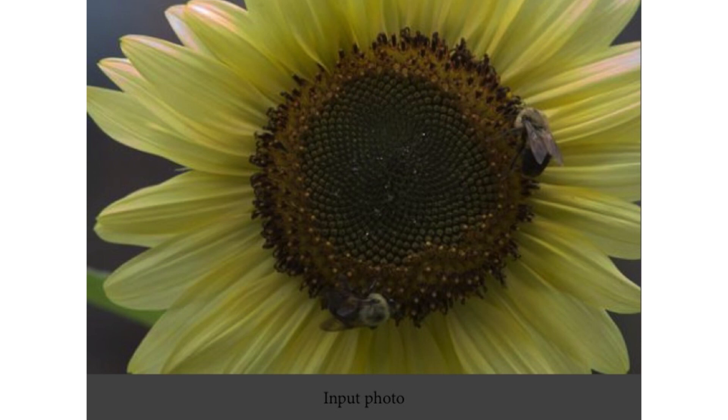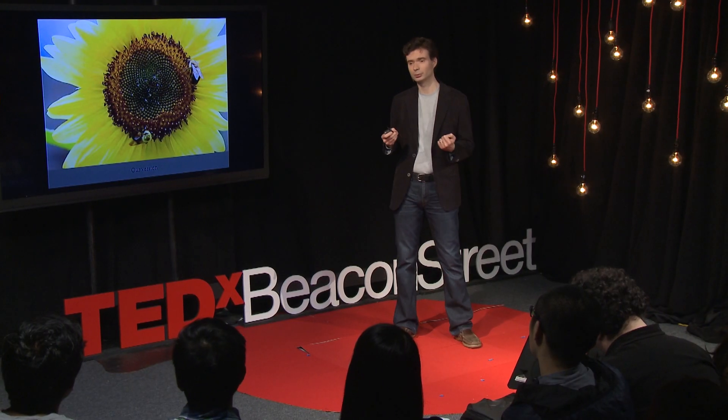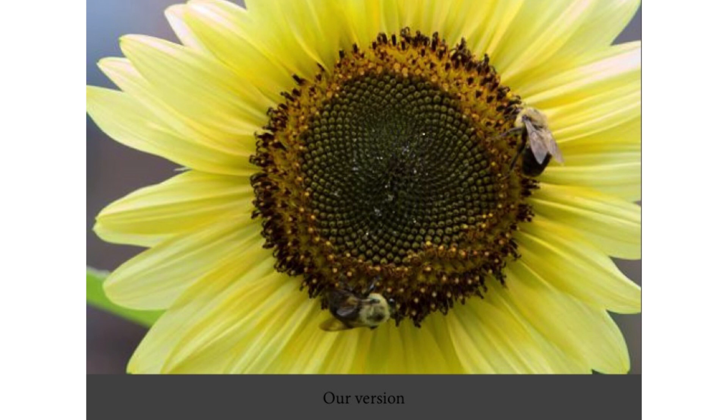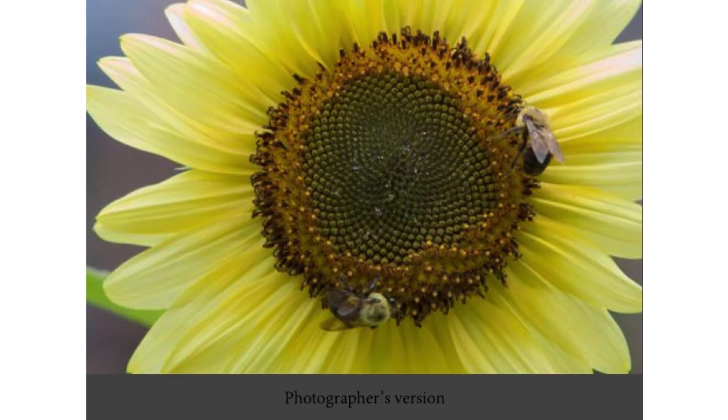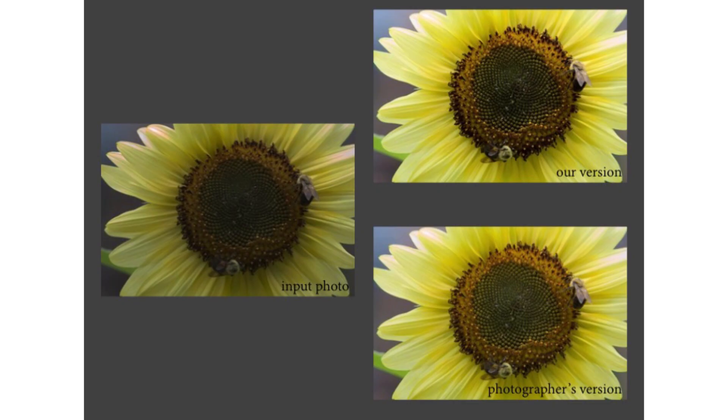So here was my sunflower as recorded by the camera, and this is our result. I think we can argue it's a lot better — it pops out more. Since this was a research project, we could go back to the photographer and ask that person to retouch the sunflower for us. We didn't show the computer's result to the photographer, and we didn't give the photographer's result to the computer — so it was a fair game. This is what our algorithm predicted, and this is what the photographer did. It's not the same, but it's close enough, and I think that's good enough to be useful in many cases.